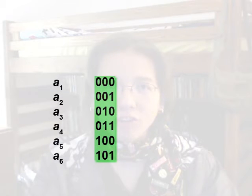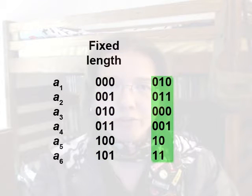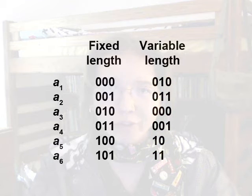Now, when every codeword is the same length, such as three bits, it's called a fixed-length code. But when the codewords have different lengths, like with Huffman coding, it's called a variable-length code.